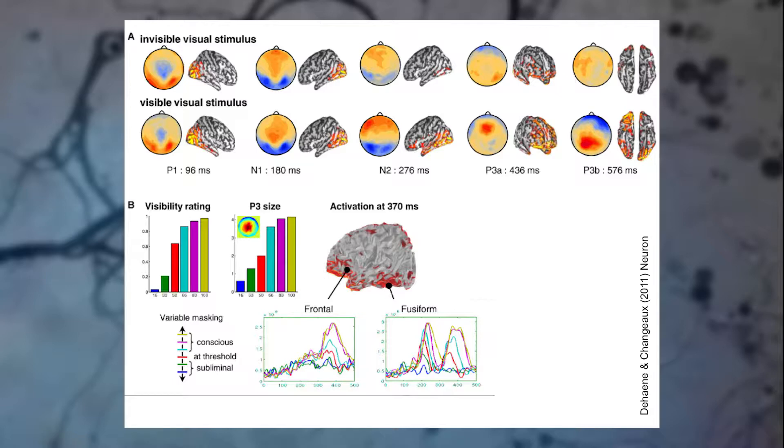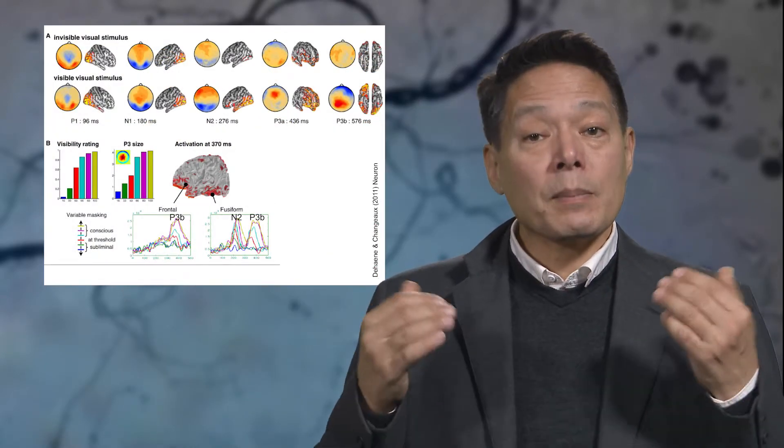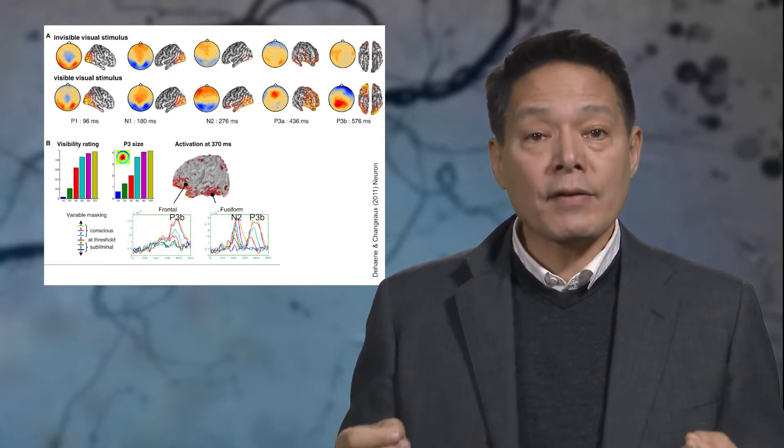In addition, the scientists had observers rank how confident they were that they had seen the target. As you can see, the magnitude of the P3B event-related potential component varied with their confidence. The more confident subjects were that they had seen the target, the stronger the P3B signal. The N2 also seems to vary with confidence. The more confident subjects were that they had seen the target, the higher the N2 component of the EEG signal. Both the N2 and P3B appear to be signatures of consciously having seen a target.